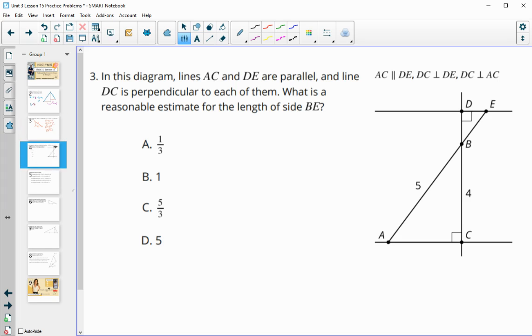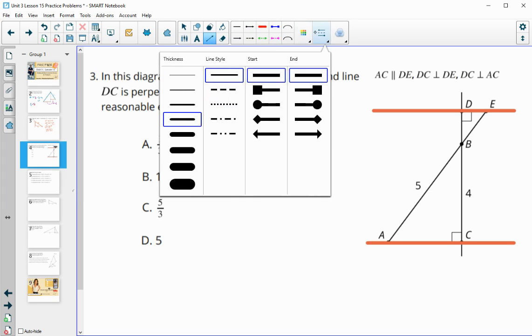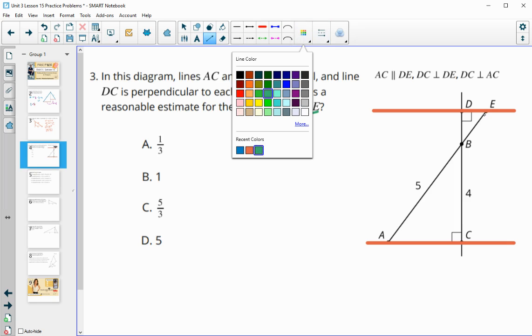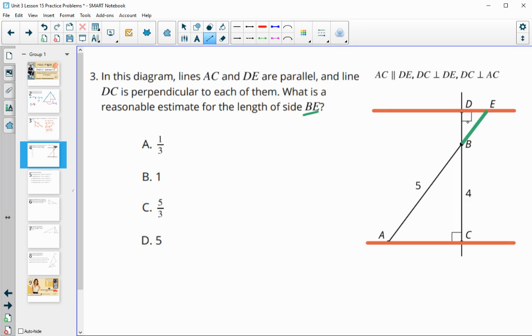Number three tells us that we have a diagram with some parallel lines. So we know that DE is parallel to AC. And then we know that DC going through here is perpendicular to each of them. So then they want us to know what would be a reasonable estimate for side BE. And so BE is here. And so we're just estimating because we don't know any of the lengths in this little triangle. So we can't set up proportions. But we're just trying to come up with a reasonable guess. So we know it's gotten smaller since these triangles are similar, because we've got a vertical angle here and the right angle.